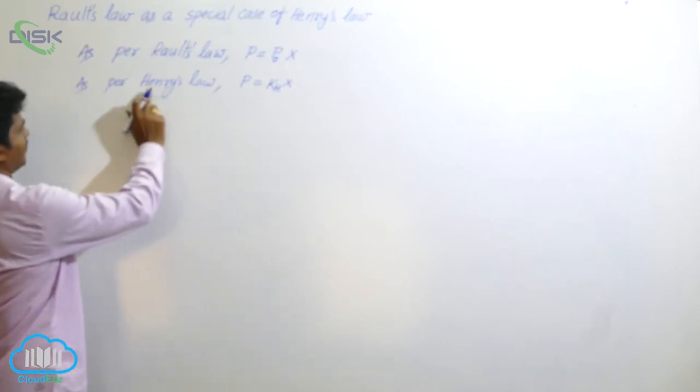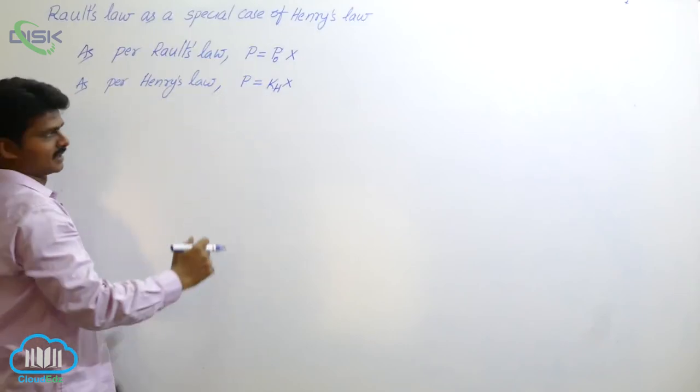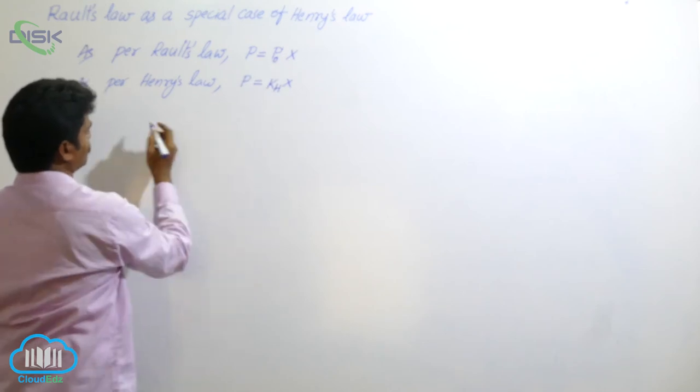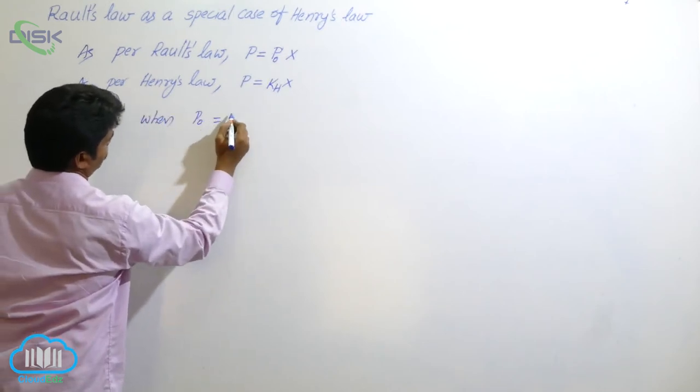So Henry's Law and Raoult's Law appear similar. They become equal when p0 is equal to kh.